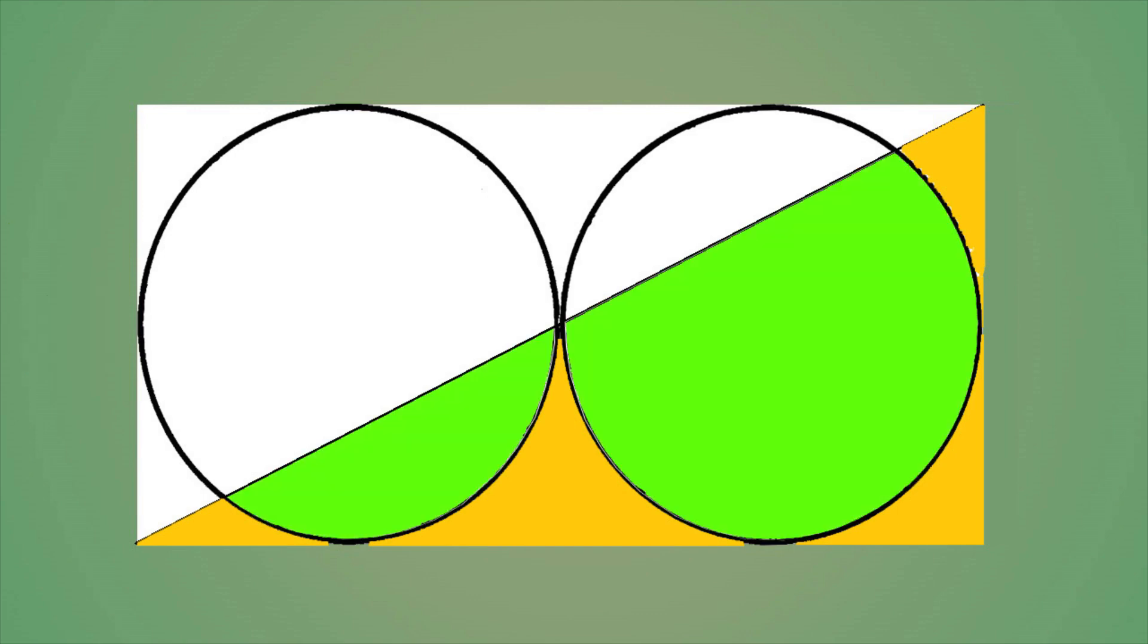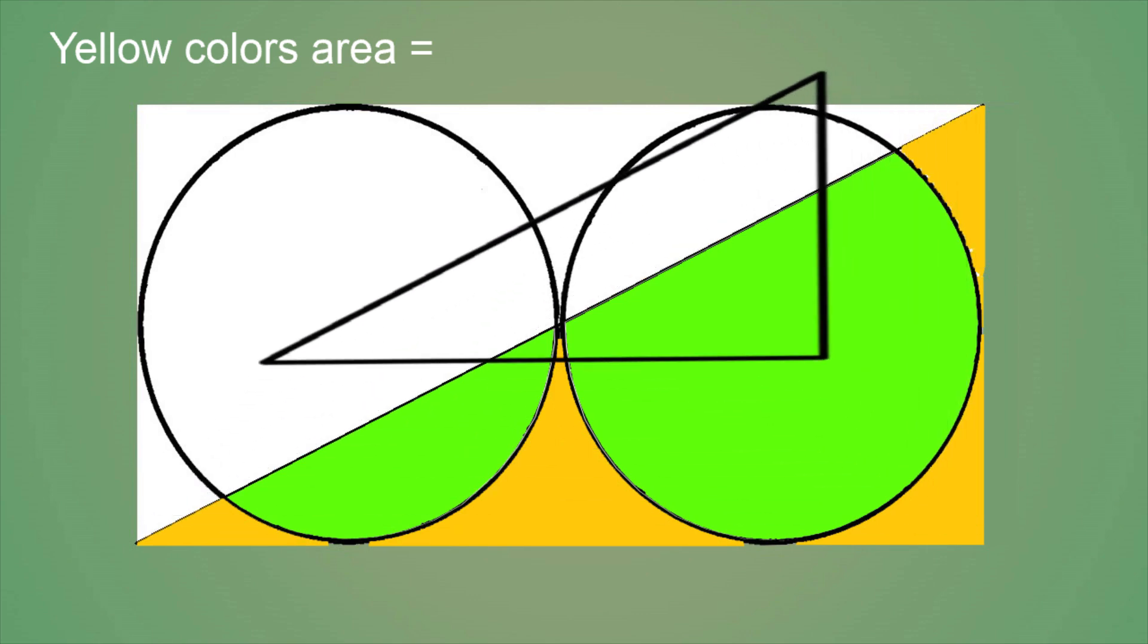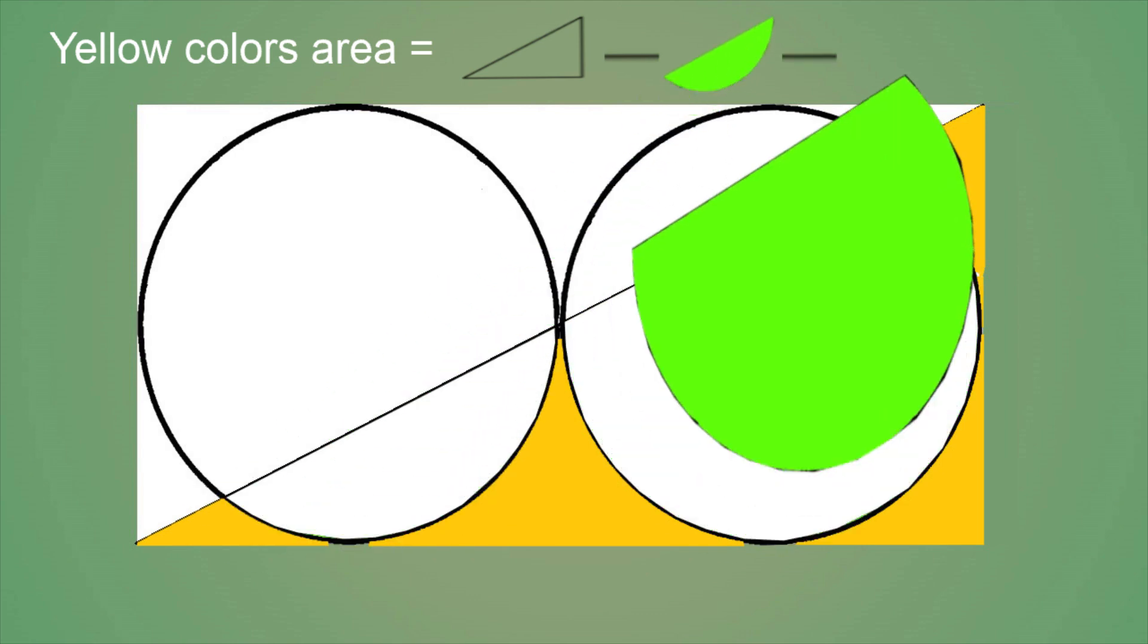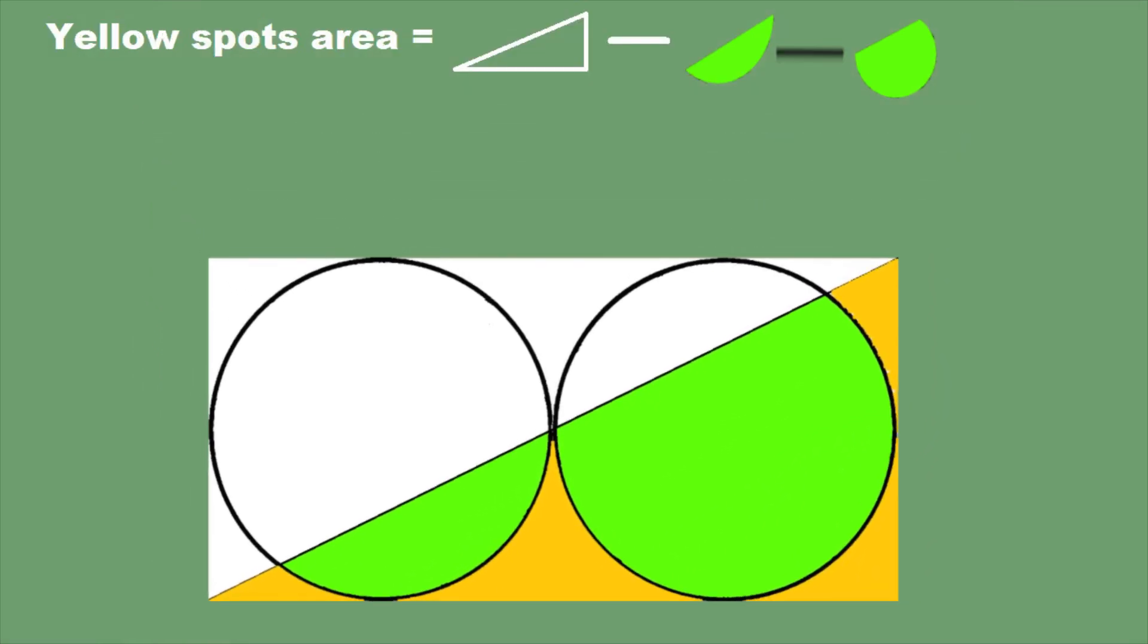That means the total area of yellow regions equals the area of the triangle minus the area of this part of the first circle minus the area of that part of the second circle.